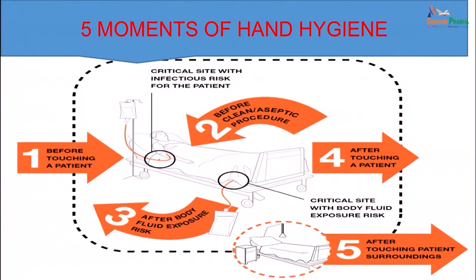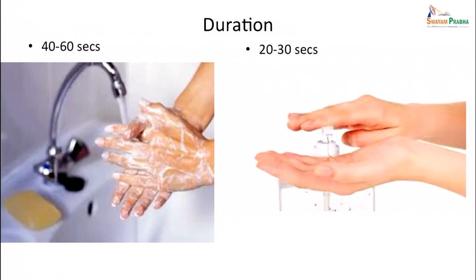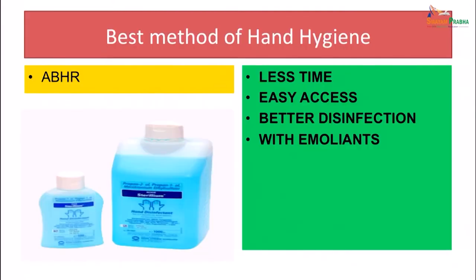There are five moments of hand hygiene identified by WHO for when you are near a patient: first, before touching a patient; second, before a clean or aseptic procedure on a patient; third, after you have been exposed to a body fluid of the patient; fourth, after touching the patient; fifth, after touching the patient's surroundings. As far as duration is concerned, hand washing by soap should be 40 to 60 seconds and 20 to 30 seconds for using the alcoholic hand rub.